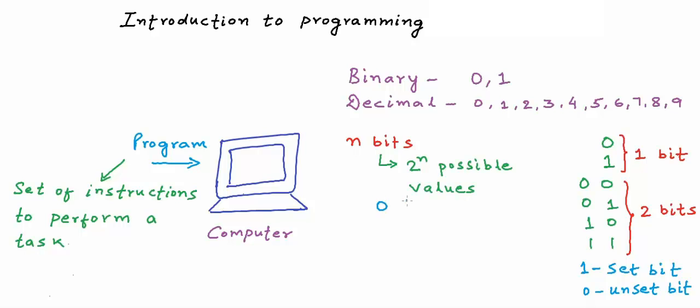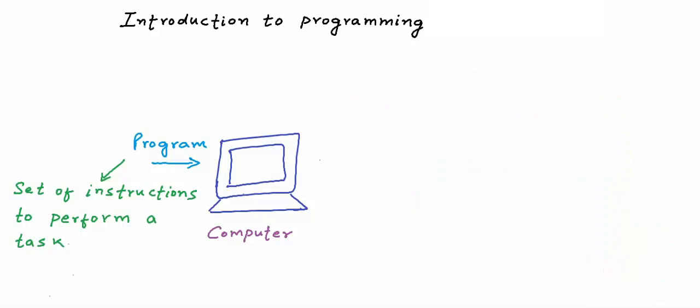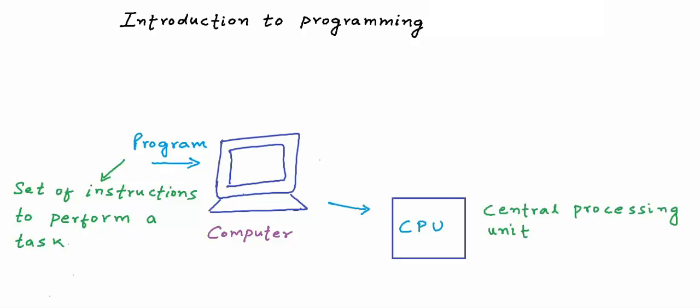We can have values from 0 till 2 to the power n minus 1. For n equal to 3, we can have values from 0 to 7. For n equal to 4, we can have values from 0 to 15. For more on the binary number system and things like how to convert a number from binary to decimal and vice versa, you can check the description of this video for some lessons. Coming back to how the computer would understand and execute instructions — the core part of the computer that executes all the instructions is called the central processing unit, or CPU.